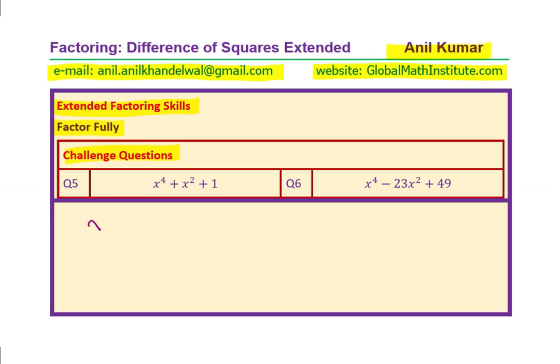Well, these are degree 4 equations. We can think like this: we can write x square equals to y. In that case, the question changes to y square plus y plus 1, and the other one will be y square minus 23 y plus 49.